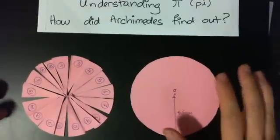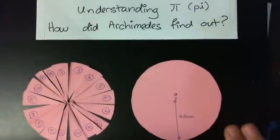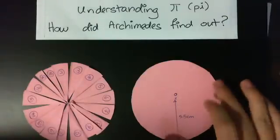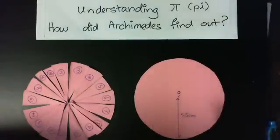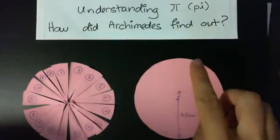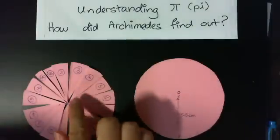Now, how did Archimedes actually find out about pi? What he did was actually something very ingenious, very smart. He took the whole circle, he broke it up into parts. He found that each portion, each small part like this...